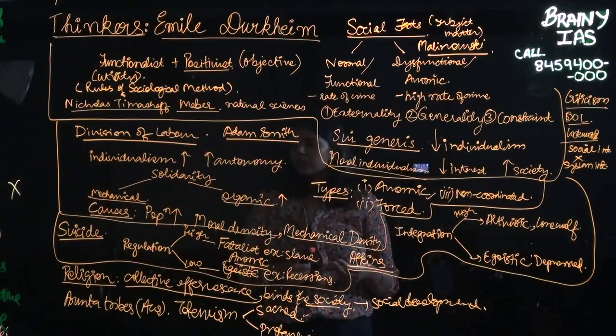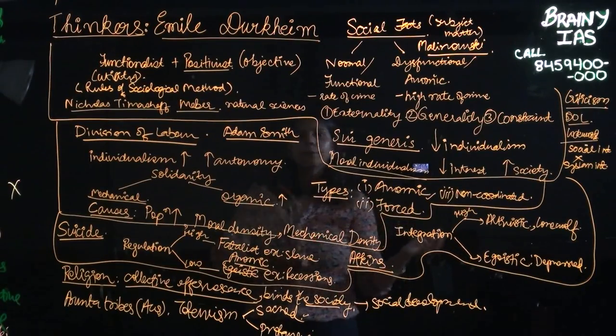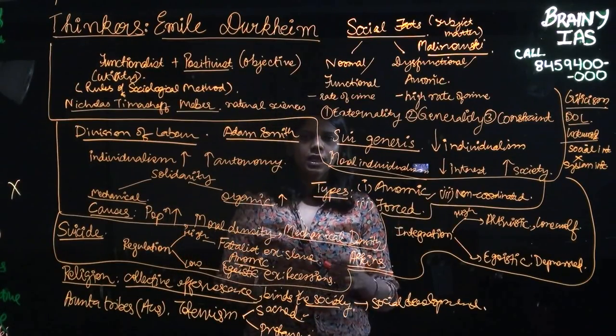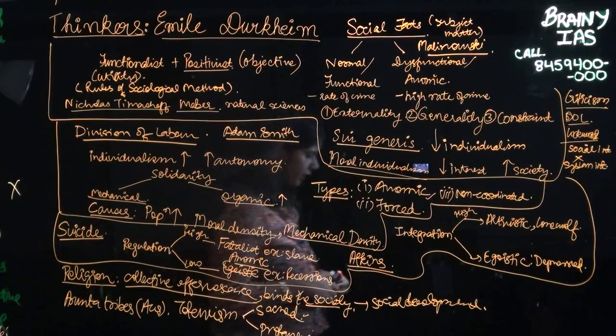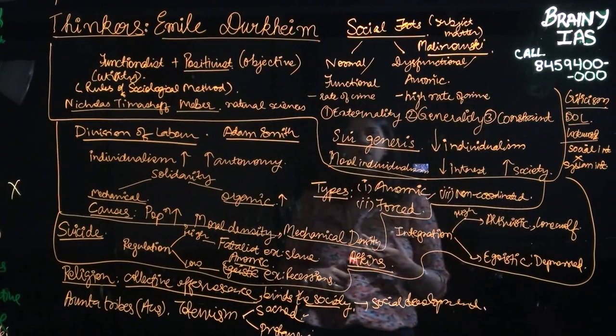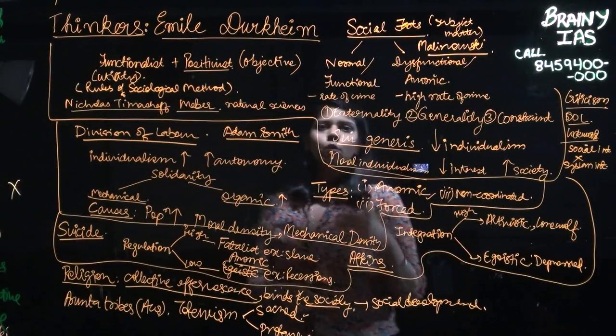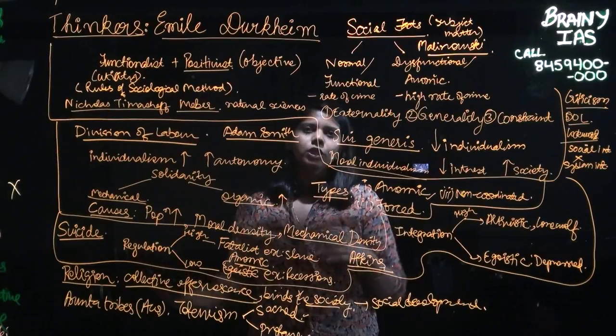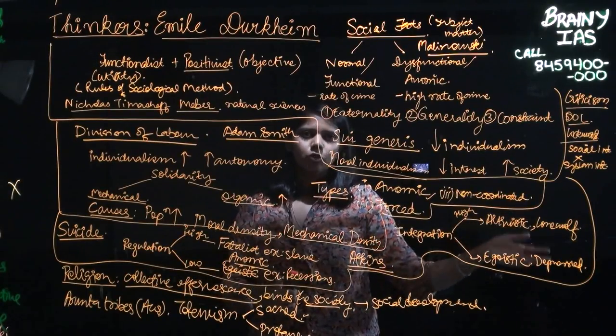He further goes on to mention that you must study primitive societies when you want to study the religion. Now let's come back to the point that he sees utility in everything because he is a functionalist. So here also he says that only when you understand religion from a primitive form will you be able to comment on its most advanced form.